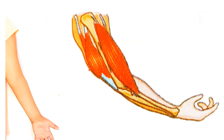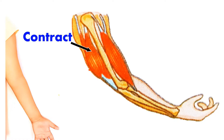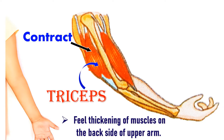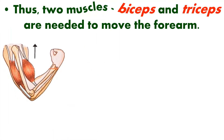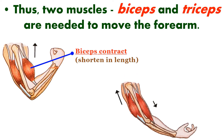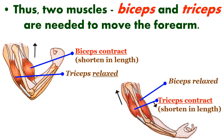When we stretch our arms downwards, the muscles on the front side of the upper arm relax, and the ones on the back side of the upper arm contract. You can also feel the thickening of these contracted muscles. These muscles are known as triceps. Thus, two muscles — biceps and triceps — are needed to move the forearm. The biceps contract and shorten in length to move the forearm up, while the triceps contract and shorten in length to move the forearm down.